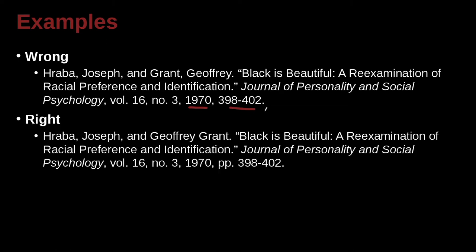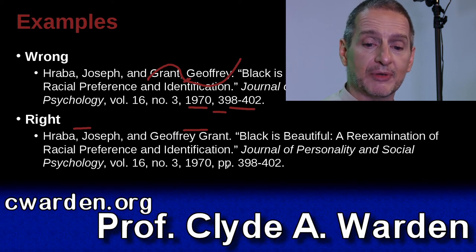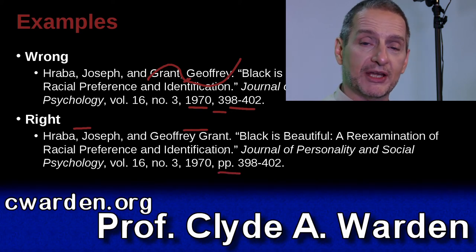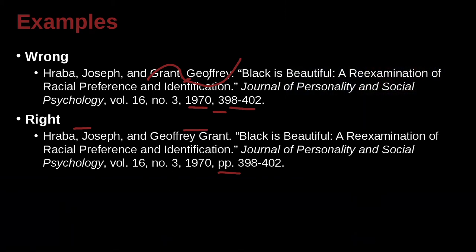The very first problem, of course, is the name for the second author. We have the name with a comma in between, which means the surname and the given name — the first name and last name — are reversed. But in MLA, we do not do that. For the first author you reverse, but for the second author you do not reverse. Very important. We also can see that we are missing our 'pp.' — period — for the pages, from what page to what page. In MLA, you do need to have that.